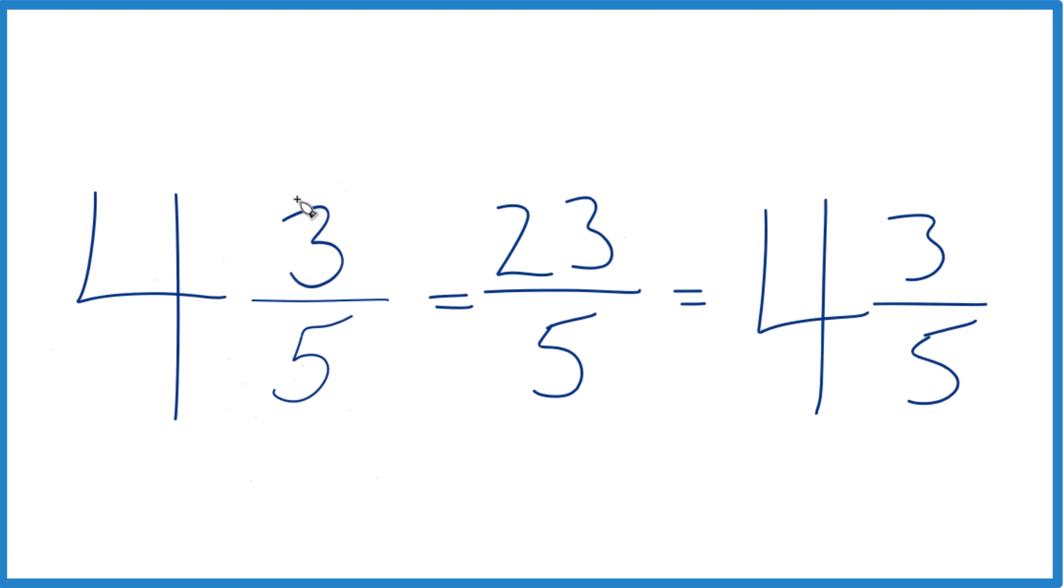And these numbers, they're equivalent. 4 and 3 fifths, that's equal to 23 fifths. They have the same value, it's just we're representing this as an improper fraction. Then we have 4 and 3 fifths, that's our mixed number.